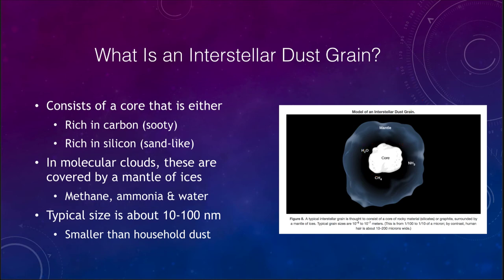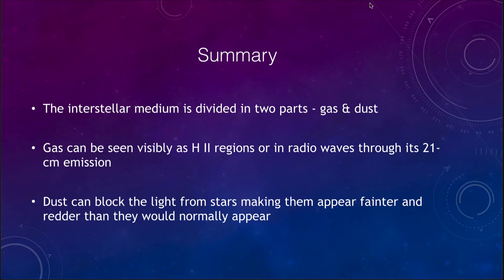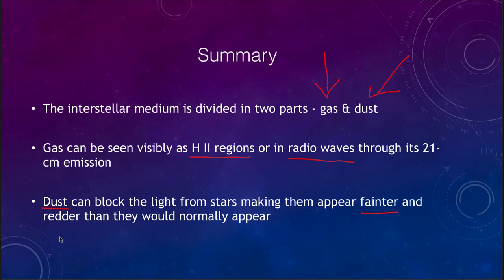To summarize: the interstellar medium is divided into two parts — gas and dust. The gas can be seen visibly as ionized hydrogen HII regions, or through radio waves as its 21 centimeter emission. The dust can block light from stars, making them appear fainter and redder than they normally would, which has affected our distance determinations in the past before we understood the full extent of dust within our galaxy. That concludes our lecture on the interstellar medium. We'll be back next time for another topic in astronomy — have a great day, everyone.